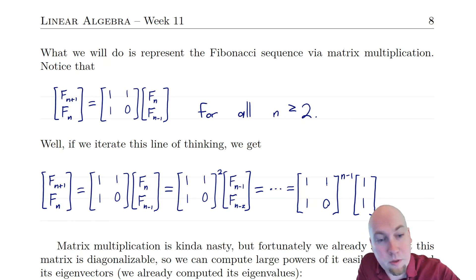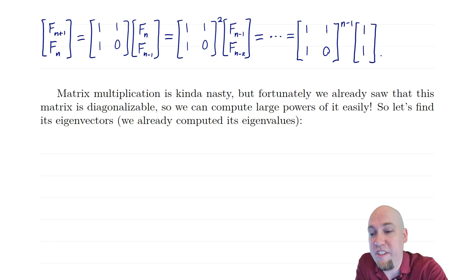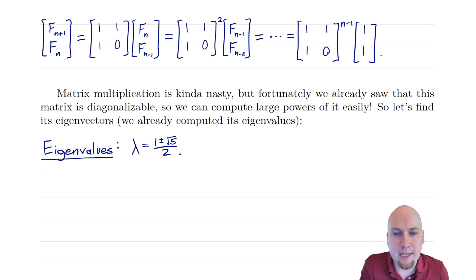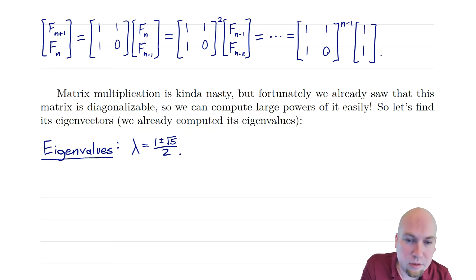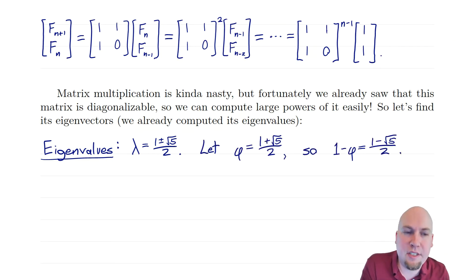Let's go through this calculation — let's diagonalize this matrix and compute arbitrary powers of it via that diagonalization. How do we do diagonalization? You need eigen stuff — get your eigenvalues, get your eigenvectors. We already computed the eigenvalues of this matrix in the previous video: the eigenvalues are (1 ± √5) / 2. We're going to need the eigenvectors as well, but the calculation is going to be slightly messy.